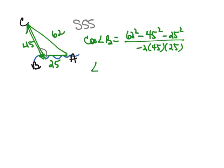So to find what angle B is, we're going to take the inverse cosine of the numerator divided by the denominator.